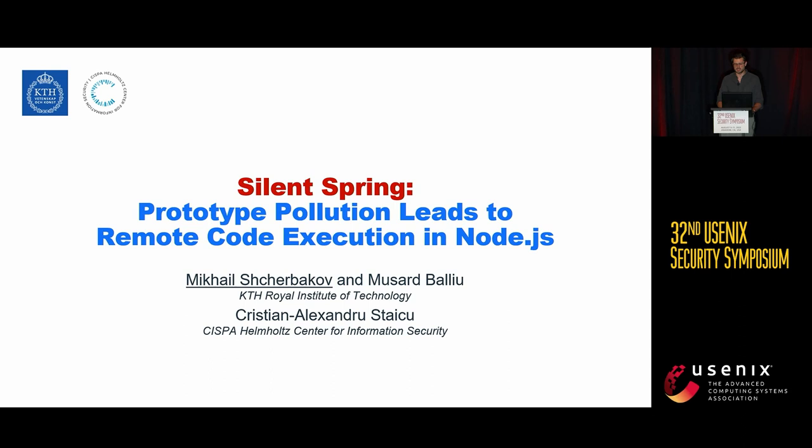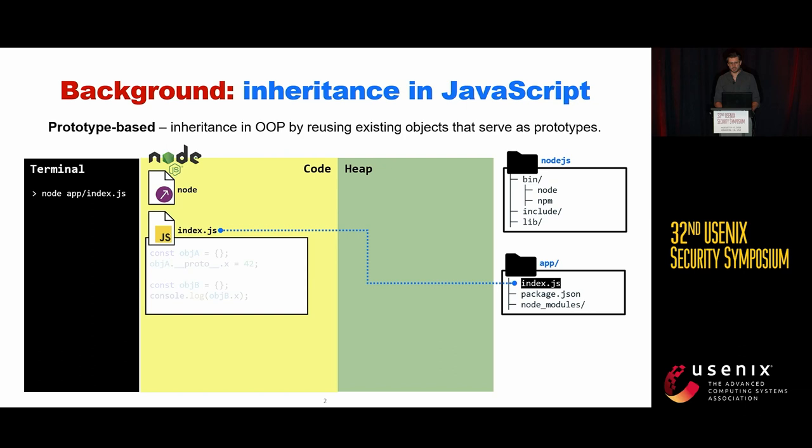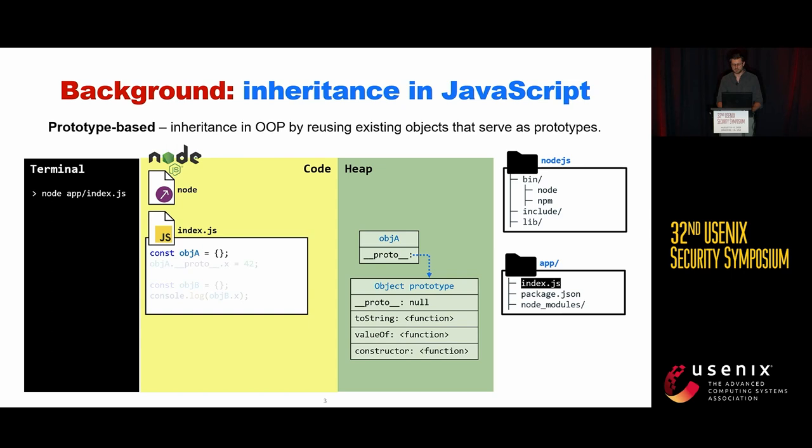Let's take a look at how inheritance works in JavaScript through an example. We run Node.js, which executes the code in the index file. The first line creates an empty JavaScript object. The runtime allocates a new object with the built-in property Proto that points to the object prototype. The object prototype has a bunch of functions we can reuse, for example, toString.